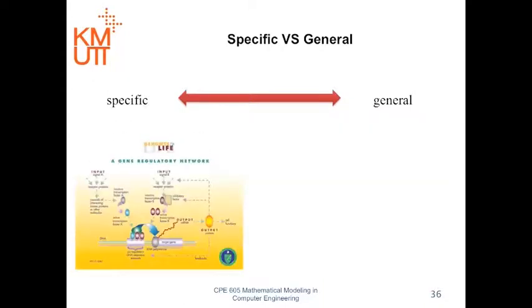A mathematical model can be specific or general. A specific model is created to describe a particular process and cannot be reused. For example, the left figure shows the gene regulatory network, which is a graph model. This model can be used to describe only these mechanisms.